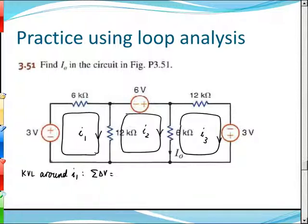We're going to apply KVL around I1, summing voltage drops. Starting here, as we walk through in the direction of the current, we walk through the 3-volt source. Is that an increase or a drop? An increase — so that's minus three.